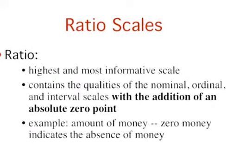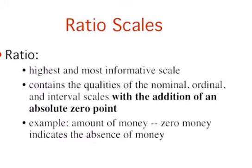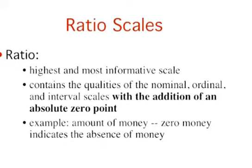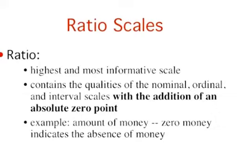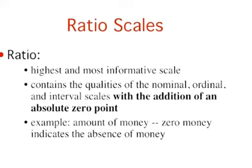The ratio scale of measurement is the most informative scale. It is an interval scale with the additional property that its zero position indicates the absence of the quantity being measured. You can think of a ratio scale as the three earlier scales rolled up in one. Like a nominal scale, it provides a name or category for each object. The numbers serve as labels. Like an ordinal scale, the objects are ordered, in terms of the ordering of the numbers. Like an interval scale, the same difference at two places on the scale has the same meaning. And in addition, the same ratio at two places on the scale also carries the same meaning.